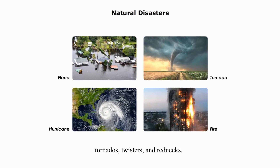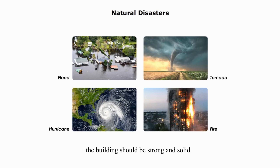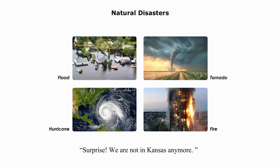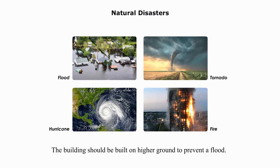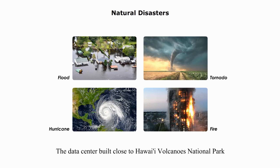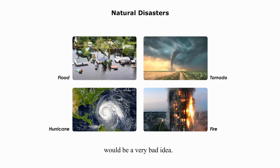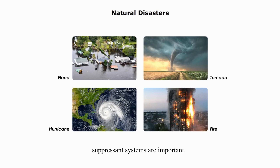Tornadoes, twisters, and rednecks. If your data center is located in Kansas, the building should be strong and solid. Otherwise, your data center will be blown away and land somewhere else — surprise, surprise, we are not in Kansas anymore. To protect the data center from possible severe weather and natural disasters, the building should have a solid foundation, walls, and high-quality roof. The building should be built on high ground to prevent water or flood, and should not be close to forests and volcanoes. A data center built close to Hawaii Volcanoes National Park would be a very bad idea. Smoke and heat detectors and automated fire suppressant systems are important.